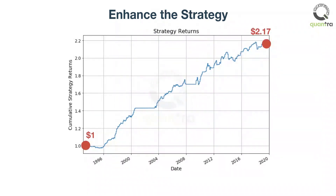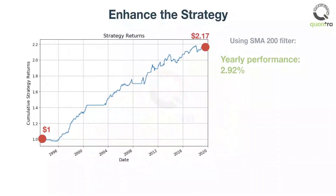As the chart of the strategy shows, the trend-following filter works well. The amended strategy has a yearly performance of 2.92%, with a maximal drawdown of minus 5.03%.